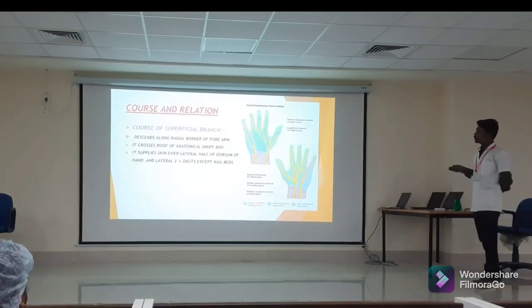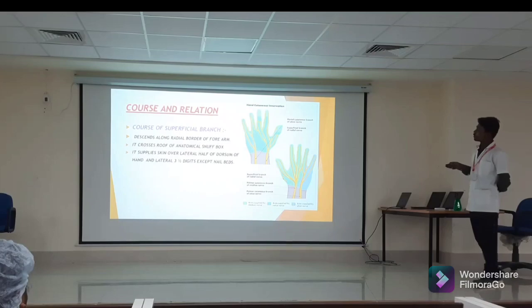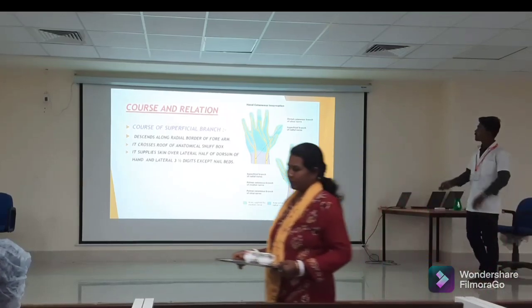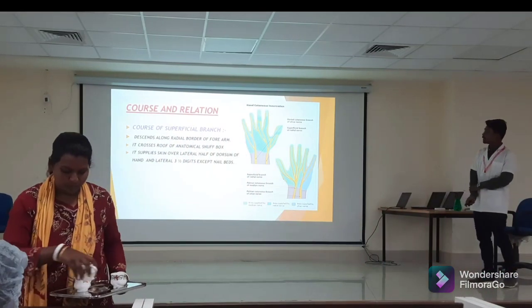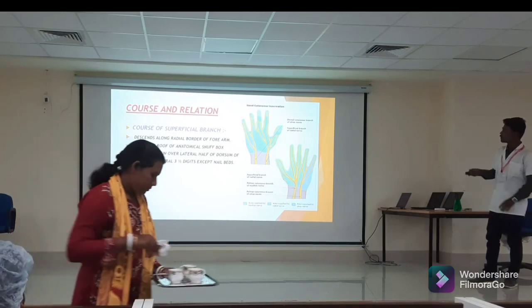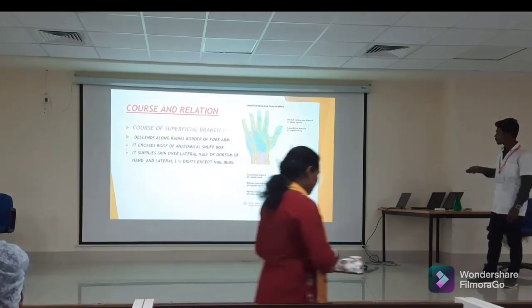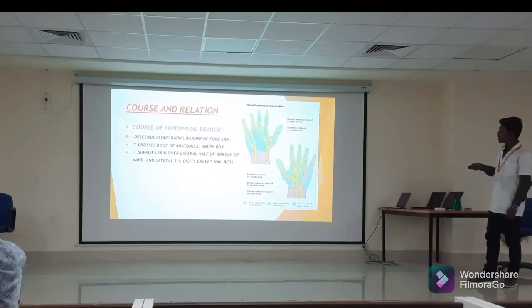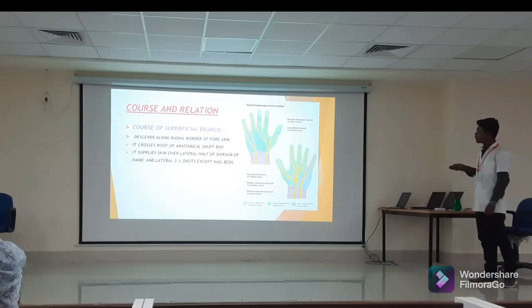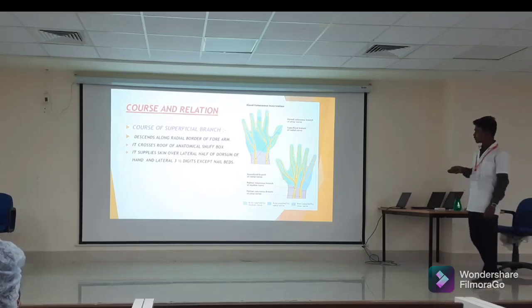The superficial branch of the radial nerve descends along the lateral aspect of the forearm, then pierces the roof of the anatomical snuffbox. It supplies the skin over the lateral half of the dorsum of the hand and the lateral three and a half digits, except the nail beds, which are supplied by the median nerve.